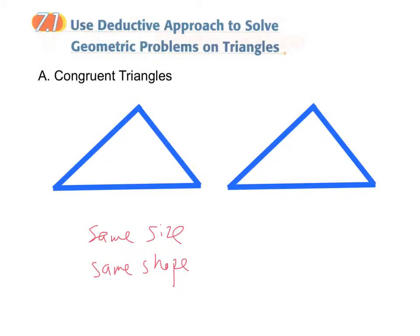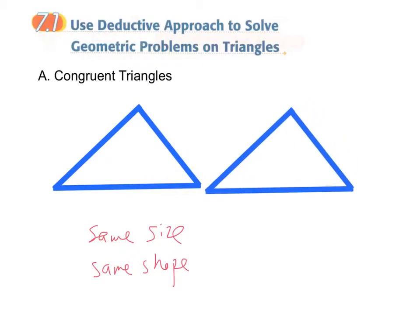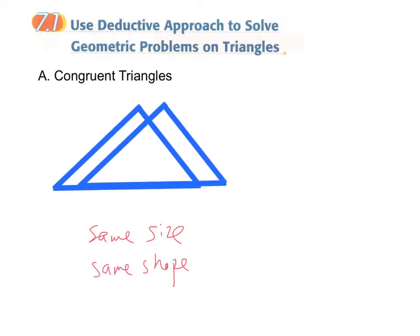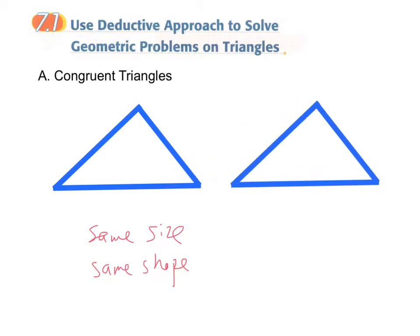That is, they can be overlapped with each other. Now these two blue triangles overlap with each other and we say that they are congruent to each other.